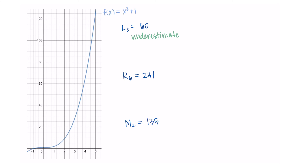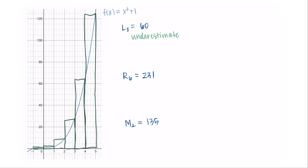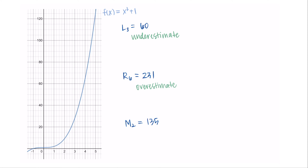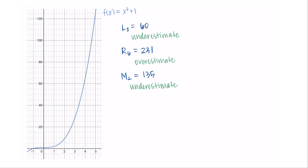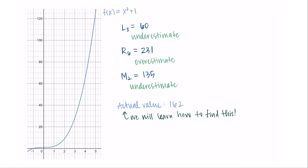For the right Riemann sum with six rectangles, using rightmost function values covers much more area but actually overestimates — we're including extra area not under the curve. For the midpoint Riemann sum with two rectangles, this is also an underestimate, though it's less obvious visually. Using exact integration techniques (which we'll learn later), the actual area is 162. It's not always the case that left underestimates and right overestimates — that's just how it worked for this particular function.